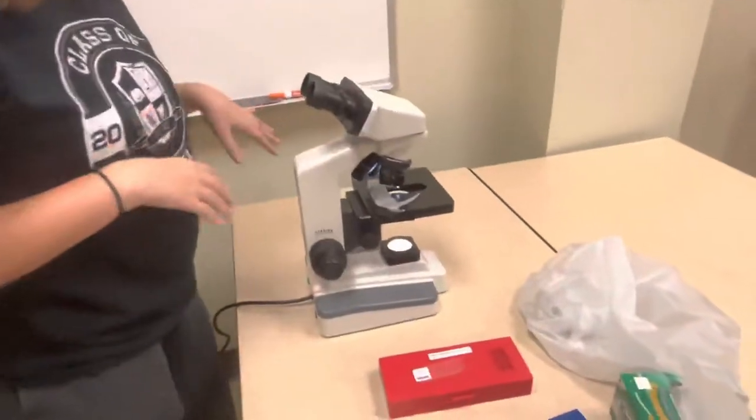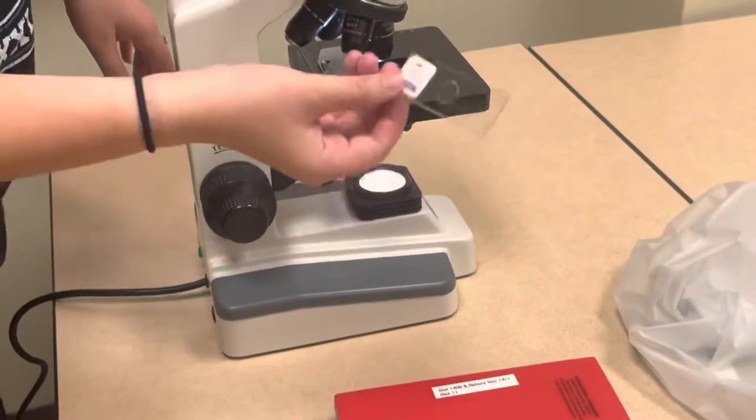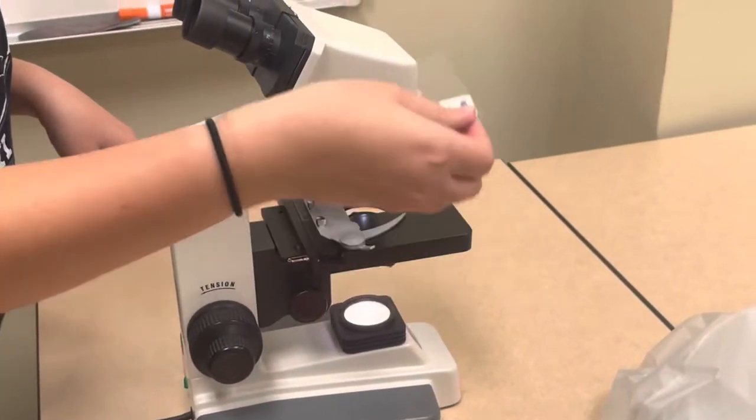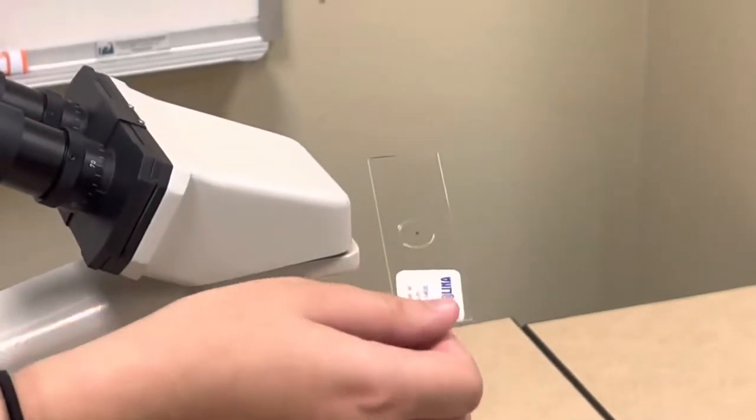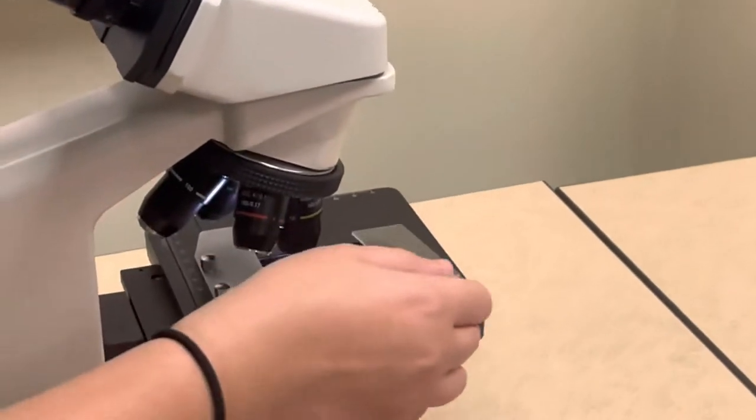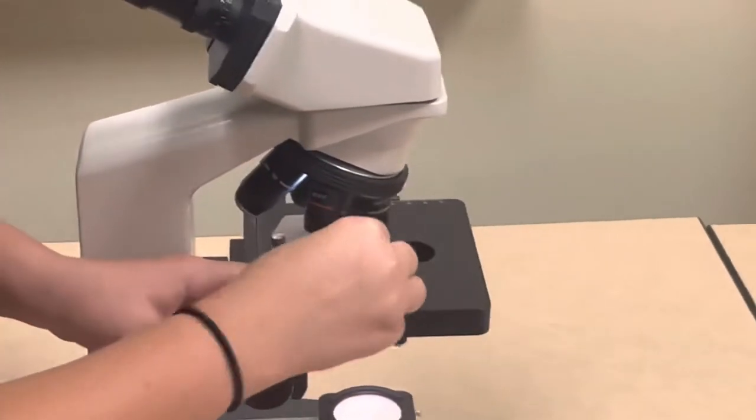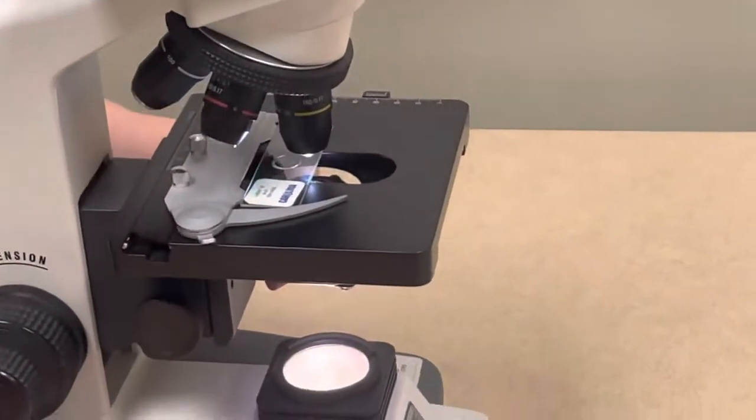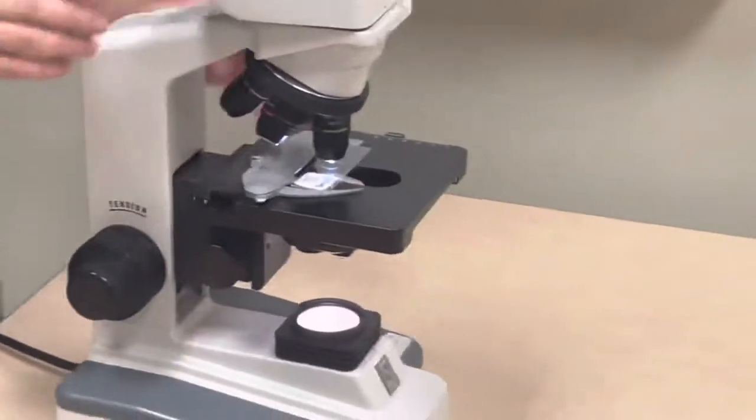Now when you're going to be starting, you're going to take the letter E slide. You're gonna want it facing away from you. So the sticker should be faced like this. And you're going to go ahead and slide it in.